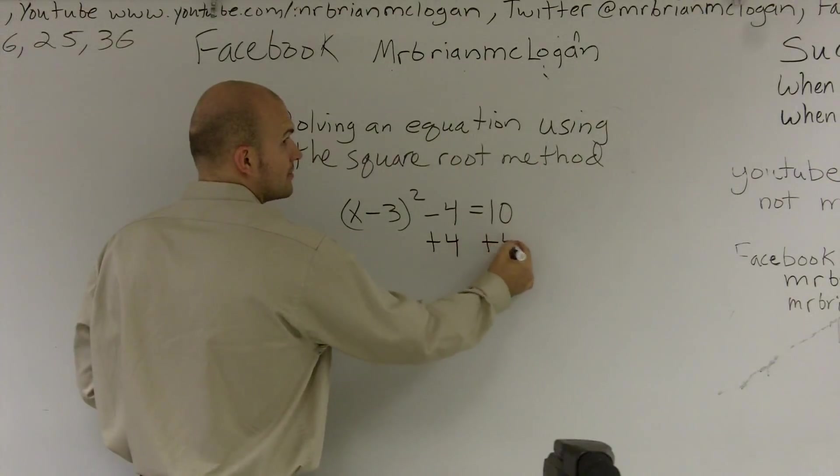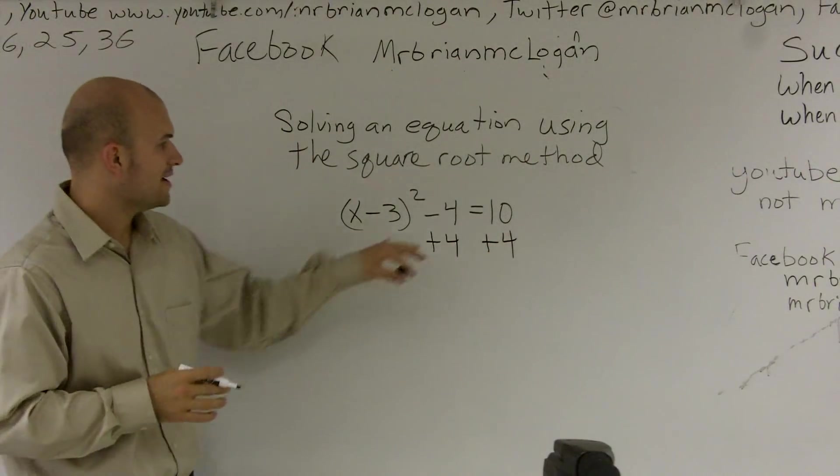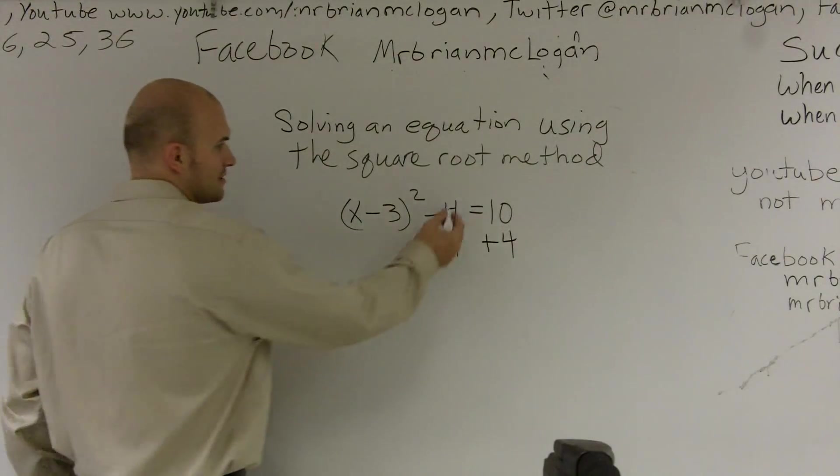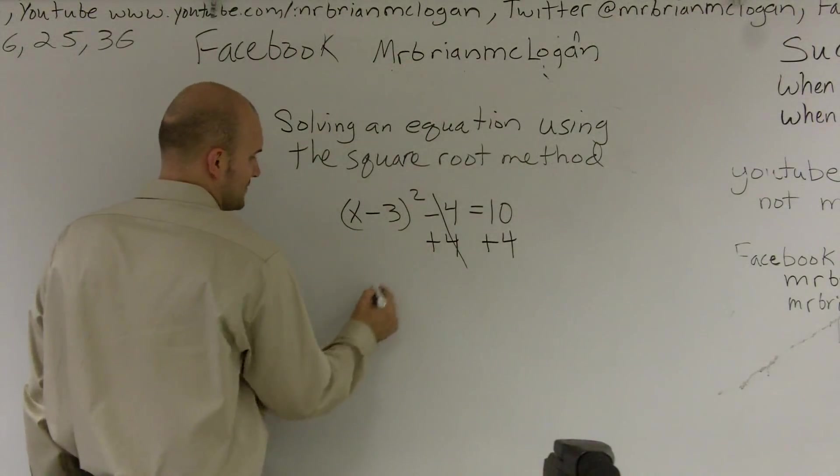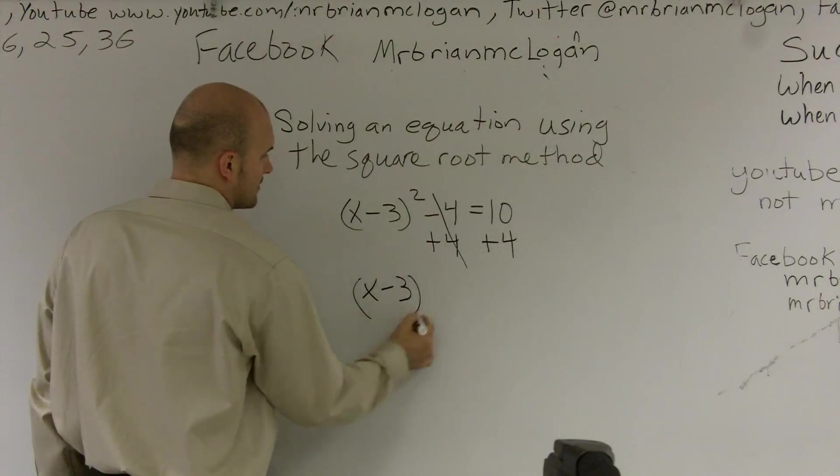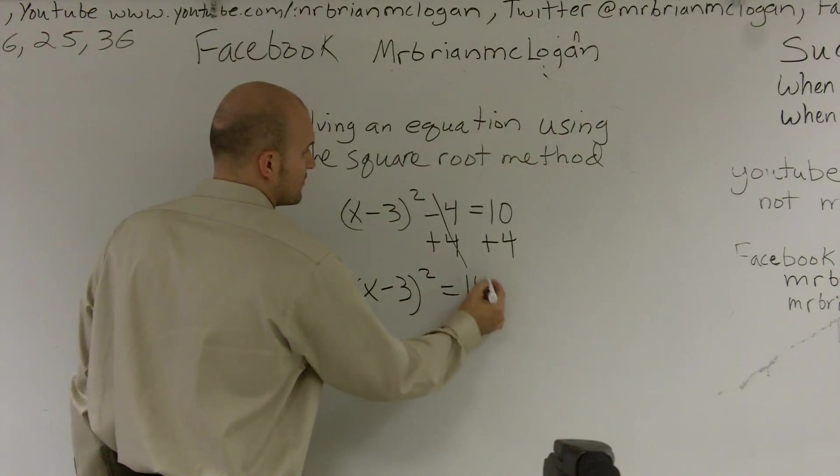So I add 4 on both sides. When I add the 4 on both sides, these now are going to cancel out. So I'm left with (x minus 3) squared equals 14.